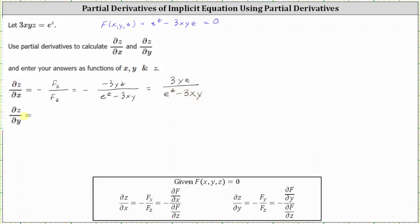And now let's find the partial of z with respect to y, which is equal to the opposite of the partial of F with respect to y divided by the partial of F with respect to z. Notice that for both partial derivatives, the denominators are the same — the partial of F with respect to z. So we know the denominator is going to be e to the z minus 3xy.